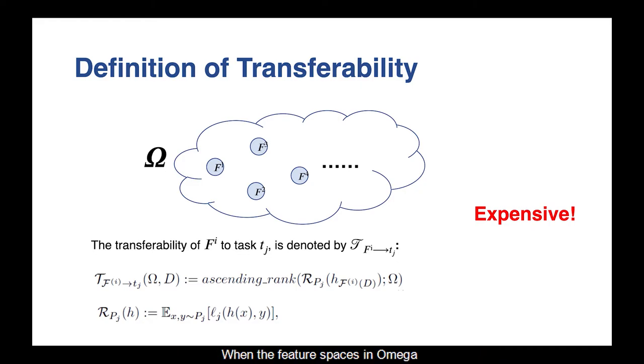When the feature spaces in omega come from different models, it can be used to solve the model selection problem. When the feature spaces in omega come from different layers of the same model, it can be used to solve the layer selection problem.